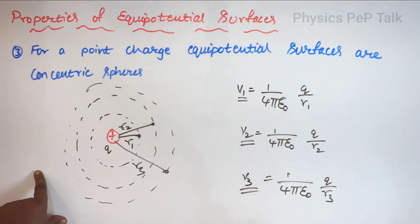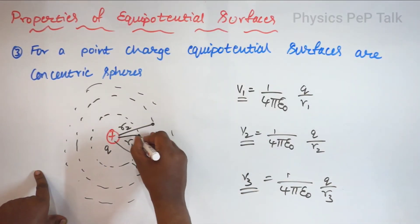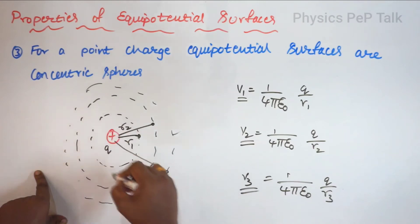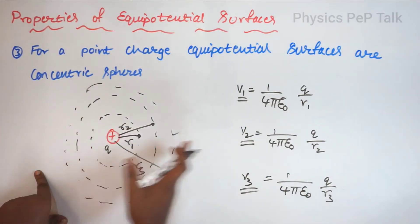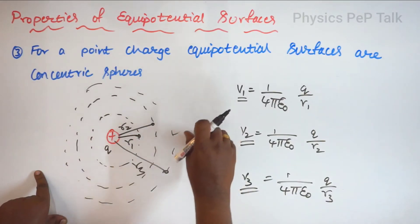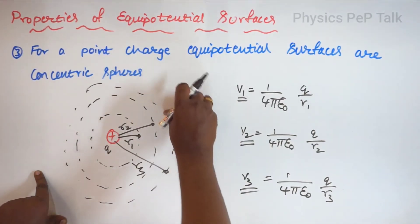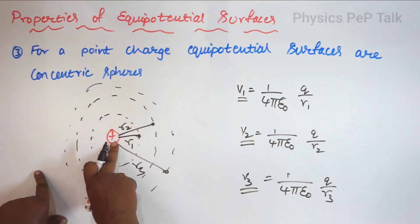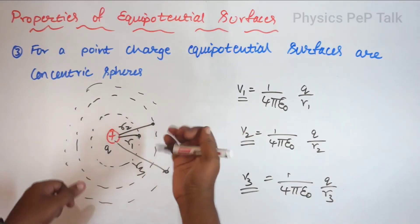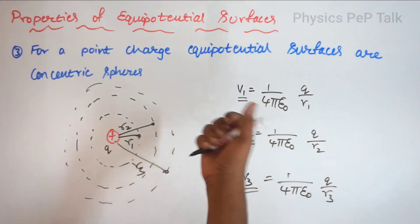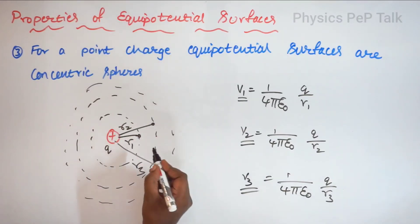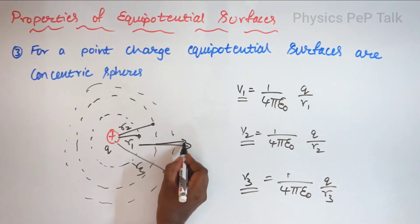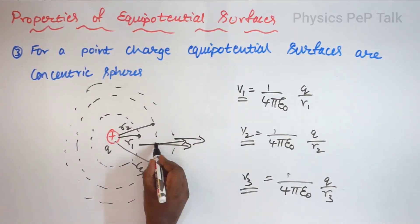So this is an equipotential surface at R1, this is an equipotential surface at R2, and this is an equipotential surface at R3. The potential on the surface of the sphere reduces as we increase the distance between the sphere and the point charge. For a positive charge, the electric field radiates outward. For each of these surfaces, the electric field is directed perpendicularly outward, confirming that the electric field and the equipotential surfaces are perpendicular to each other.